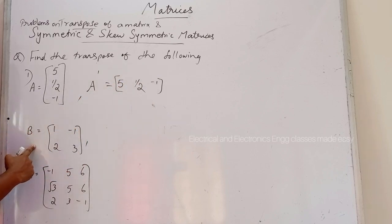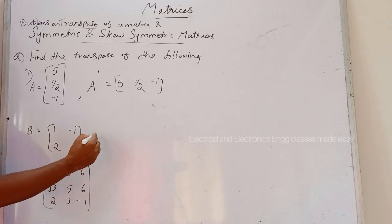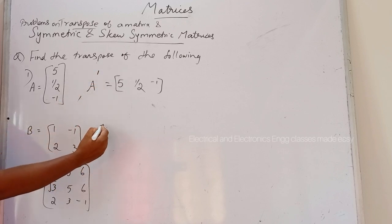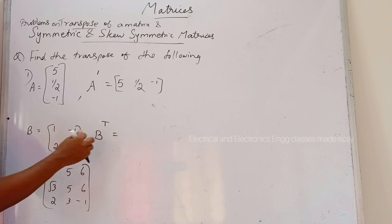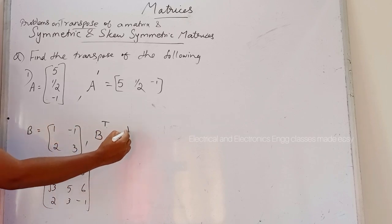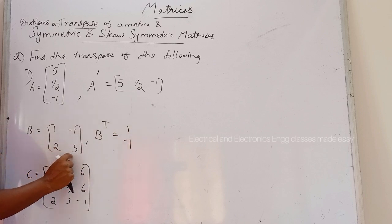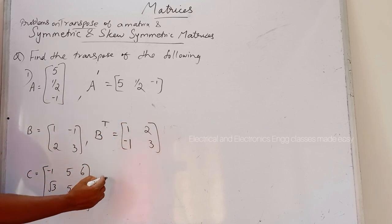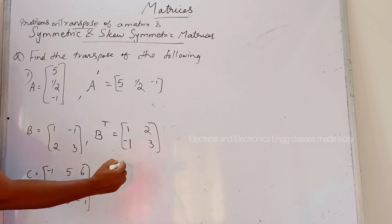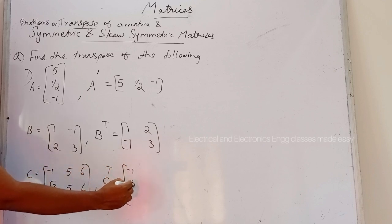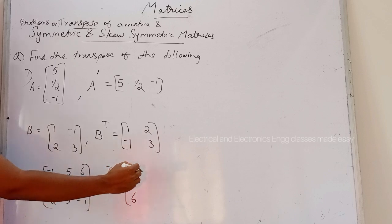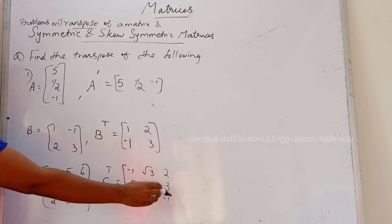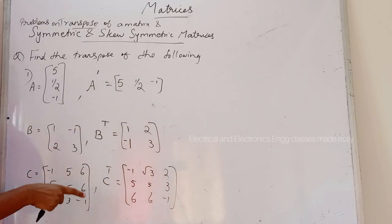Next, B is equal to [1, -1, 2, 3]. The notation for transpose is either a dash or T. For B transpose, the first row is written as the first column, then the second row is written as the second column. For matrix C, C transpose is formed by writing the first row as the first column, second row as the second column, and third row as the third column. These are the transposes of the given matrices.